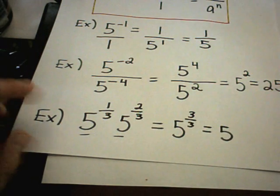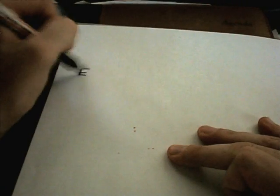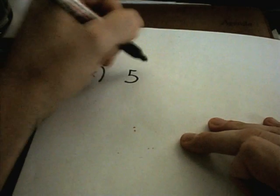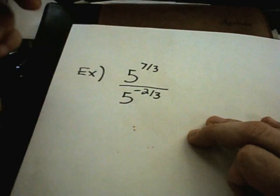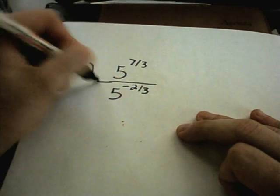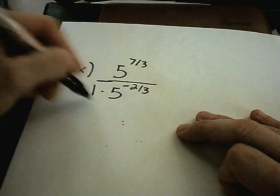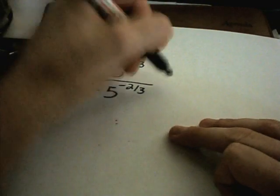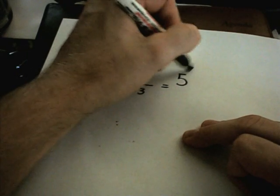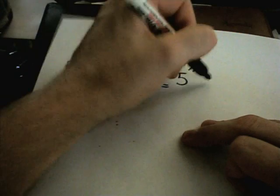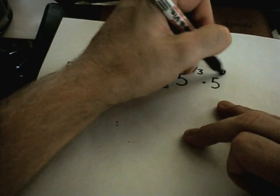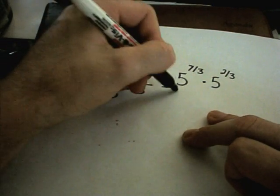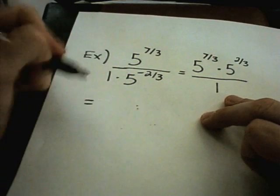You can combine fractional exponents with negative exponents. So, suppose I have 5 to the 7 thirds over 5 to the negative 2 thirds. Well, in this problem, I can think about there being a times 1 in the bottom. That's not going to change the denominator at all. Well, the 7 thirds already has a positive exponent, so I'm going to leave it like it is. I can move the negative 2 thirds up to the numerator and make it positive 2 thirds.